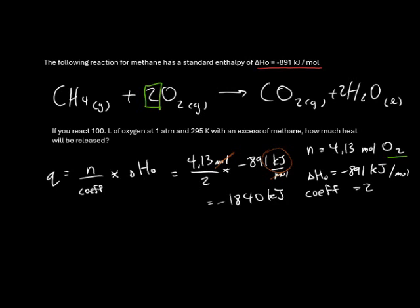Since this answer is negative, negative stands for energy being released. If it was positive, the energy would be absorbed instead. That tells us that doing this reaction with 100 liters of oxygen will release 1840 kilojoules.